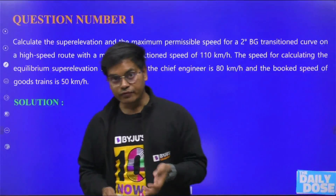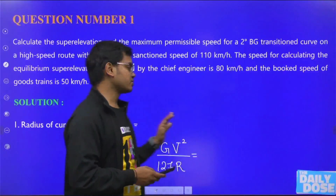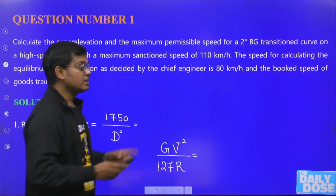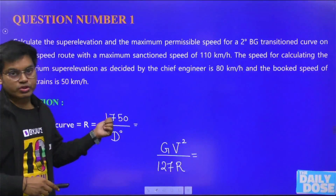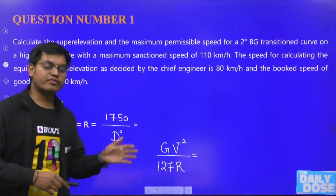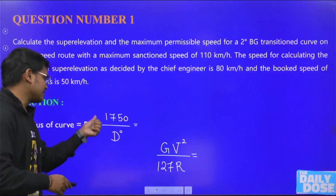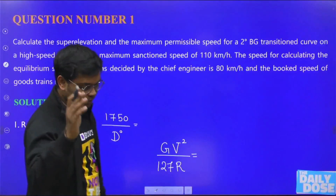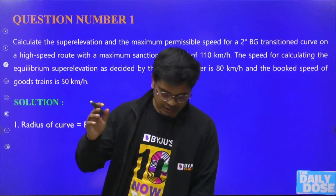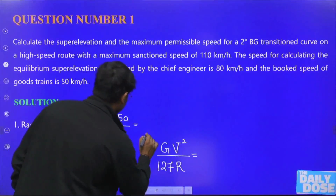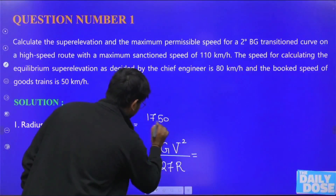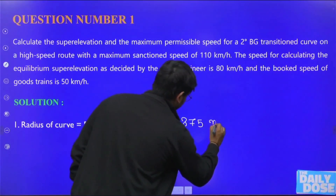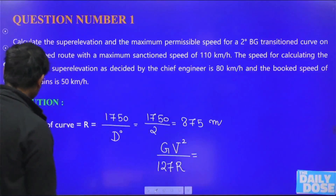The first thing to find is the radius of the curve, using the formula R = 1750/D degrees. It used to be 1720, but now because we use a 100-foot chord or 30.5 meter chord, we use 1750. Putting D = 2 degrees, the radius is 875 meters.